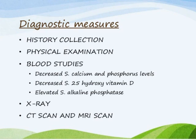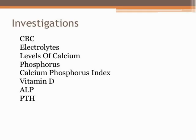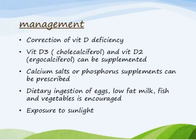Additional investigations include CBC (complete blood count), electrolytes, calcium levels, phosphorus levels, calcium-phosphorus index, vitamin D, alkaline phosphatase (ALF), and PTH. These blood investigations are very important tools for detecting the condition of osteomalacia.